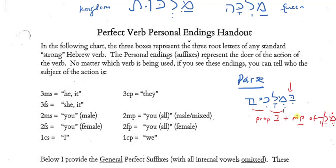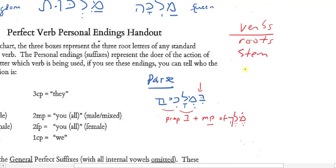And we're going to learn that information in this first handout. In Hebrew, we have roots, stems, conjugation patterns, and then person, gender, number.